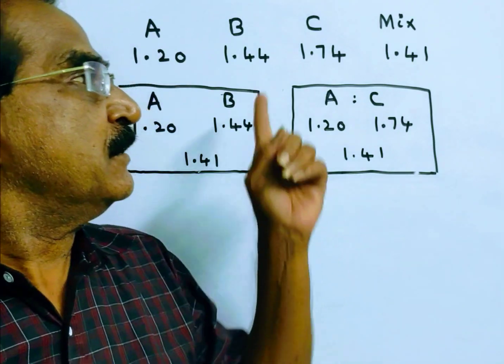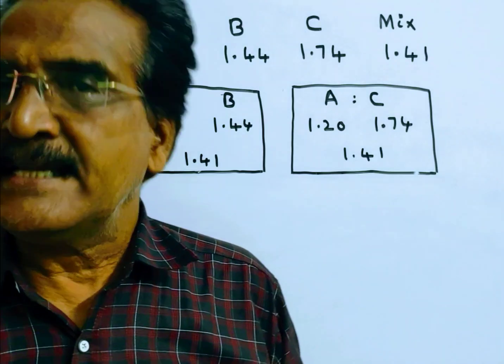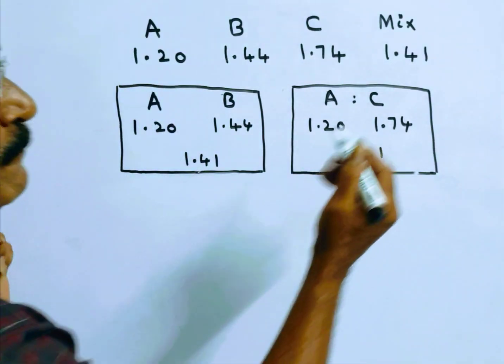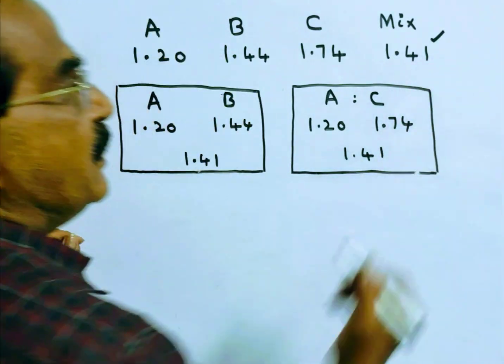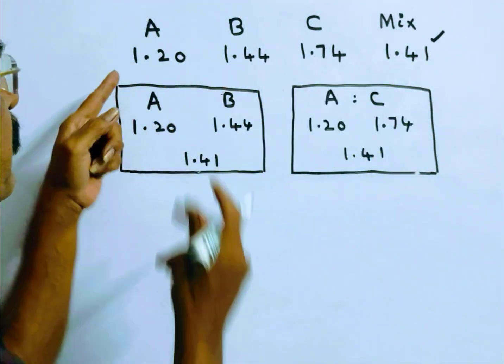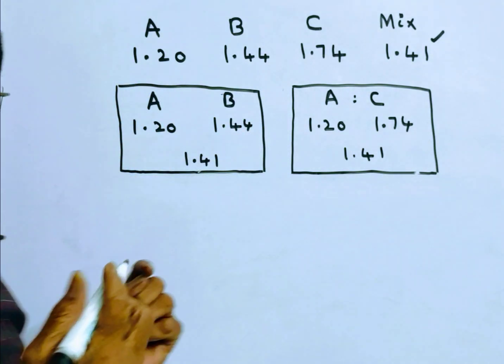One such solution I am explaining here, friends. The worth, the price of the mixture, lies between A and B. So now let us find the ratio of A and B by the rule of allegation.